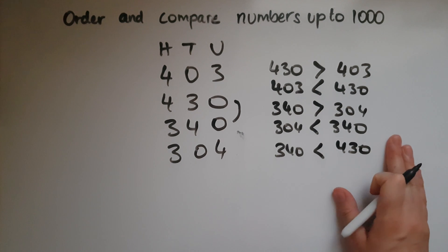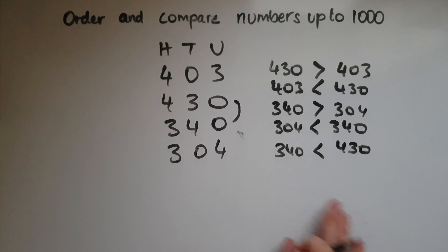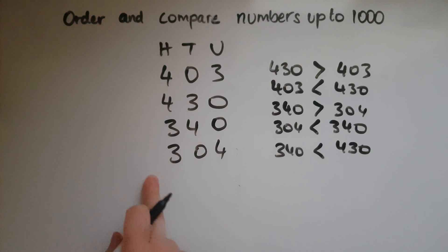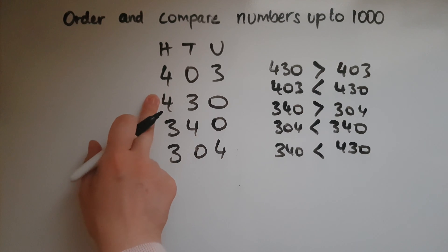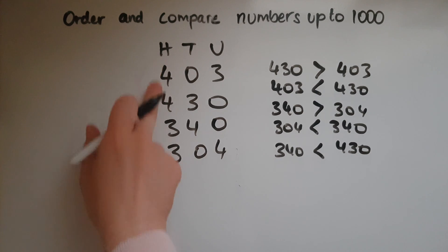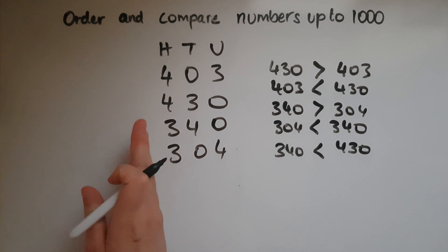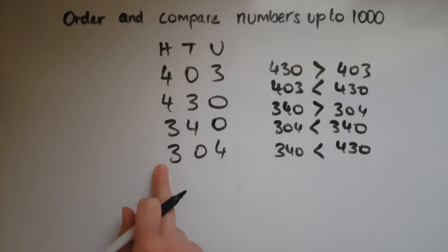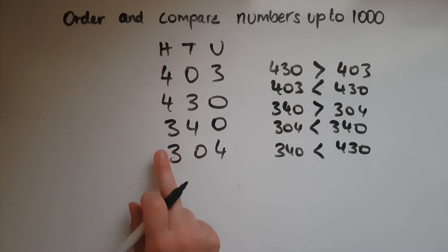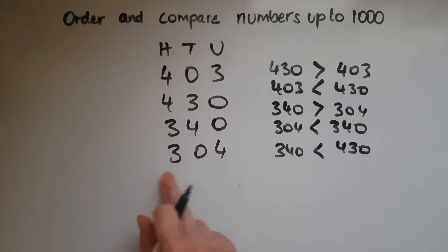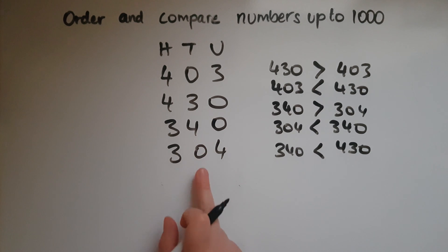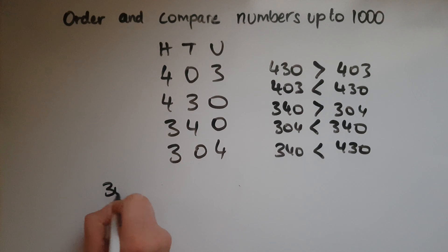So we've compared them, now let's order them. Which one would come first? Let's order from smallest to biggest. I can see that 340 and 304 have 300, whereas 403 and 430 have 400, so those are bigger. Hundreds are bigger than tens and units, so one of the 300s will be the smallest. Is it 340 or 304? It is 304, because it has no tens at all — just four units.